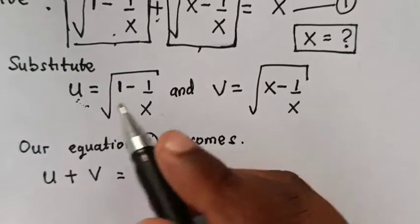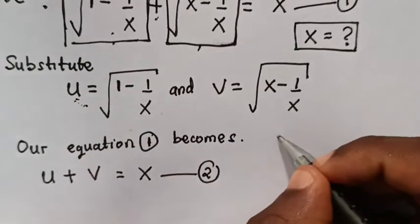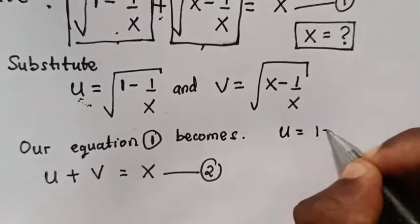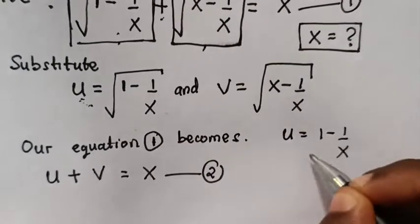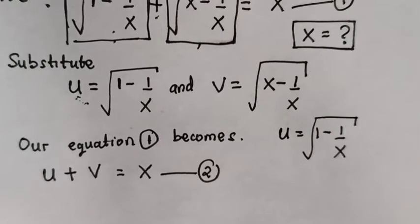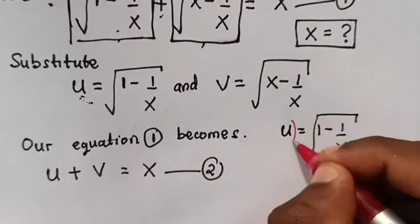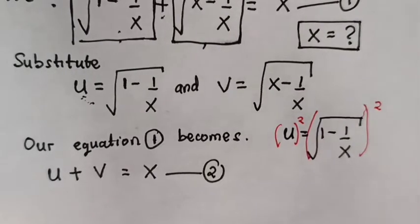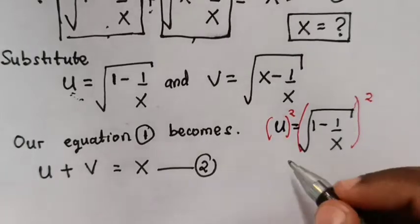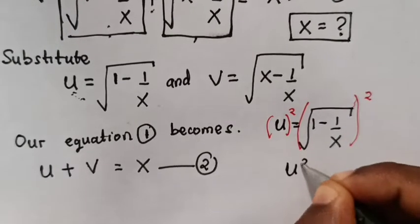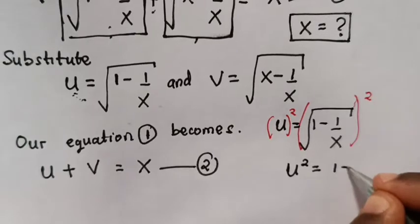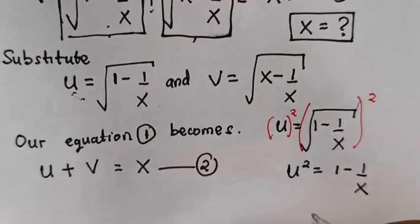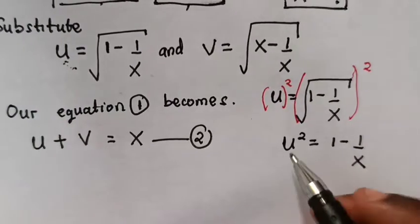Now, u is equals to square root of 1 minus 1 over x. To remove the square root, we square u, so u squared is equals to 1 minus 1 over x. The same we do for v.